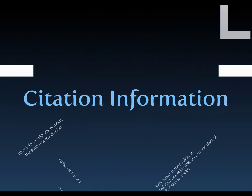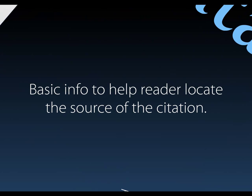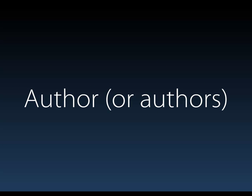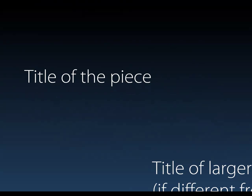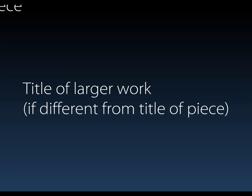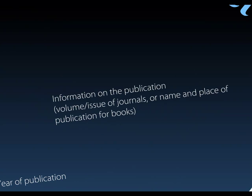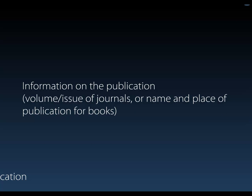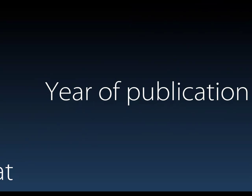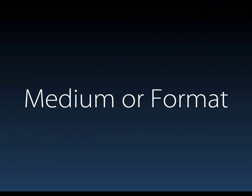The first thing we're going to talk about is the kind of information that you need for MLA style citations. Basically you need information that is going to help your reader locate the source. You're going to need to know the author or authors, the title of the piece you're citing, the title of the larger work if it's different — for example if you're citing an essay from a book or an article from a journal. You'll also need publication information such as volume or issue numbers for journals, or the name and place of publication for books, the year of publication, and finally the medium or format of publication, which will usually be print or online.